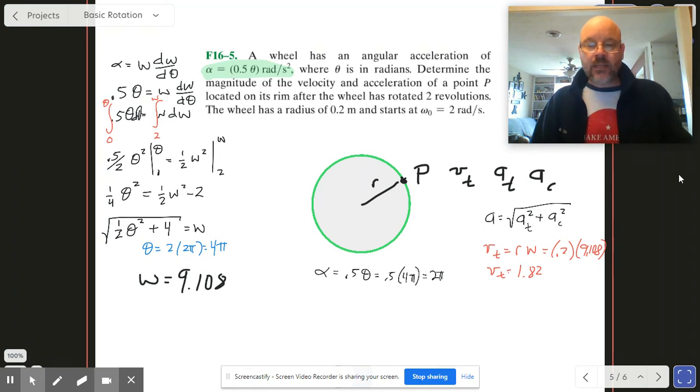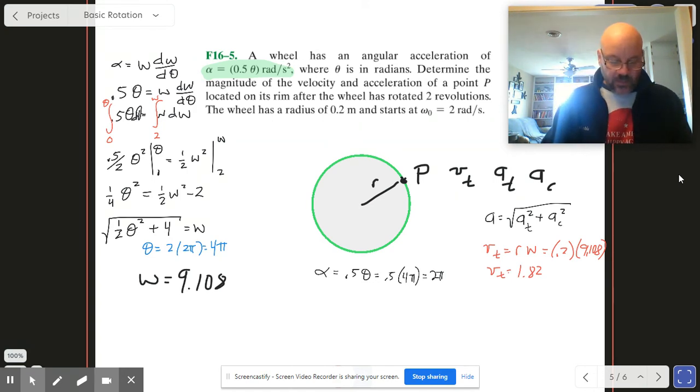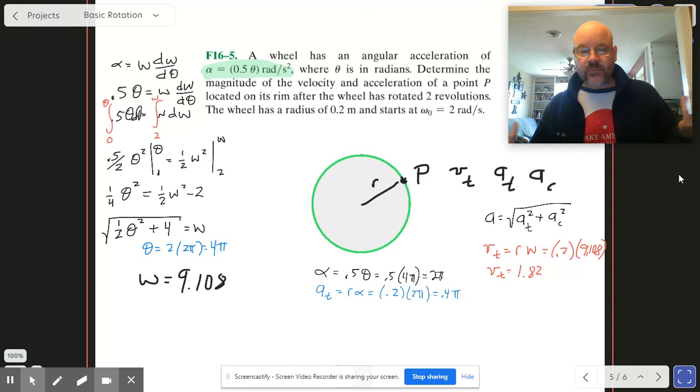Okay. Let's work on the acceleration part. Okay. We've got alpha. So that means we can get At really easily. I'm going to move over here. So At is just going to be R times alpha. So that means I'm 0.2 times 2 pi or 0.4 pi. And of course, we'd have to plug in what that number was with 3 sig figs in the end.